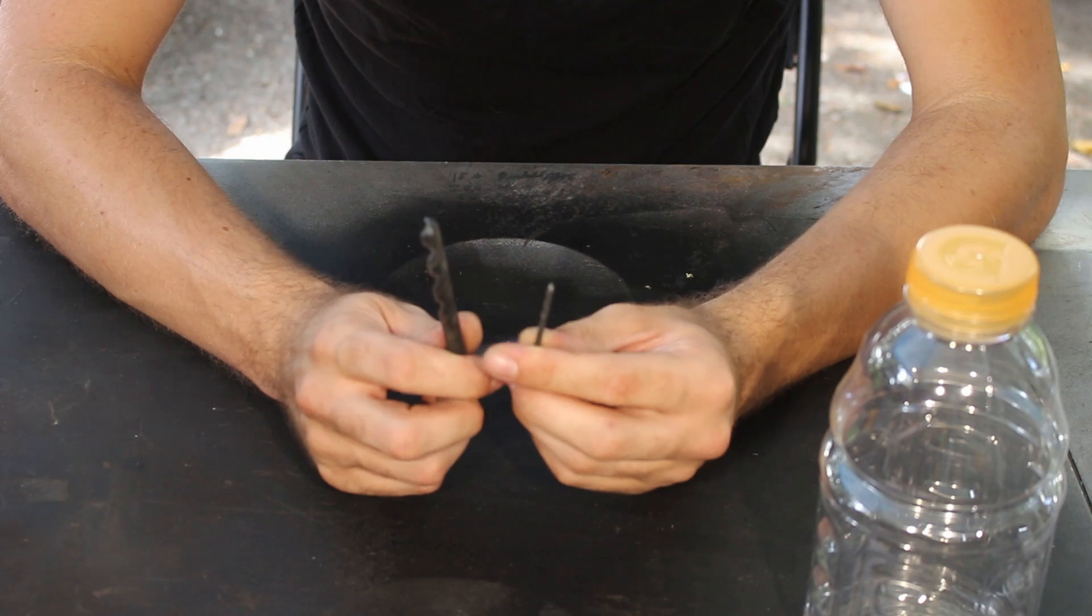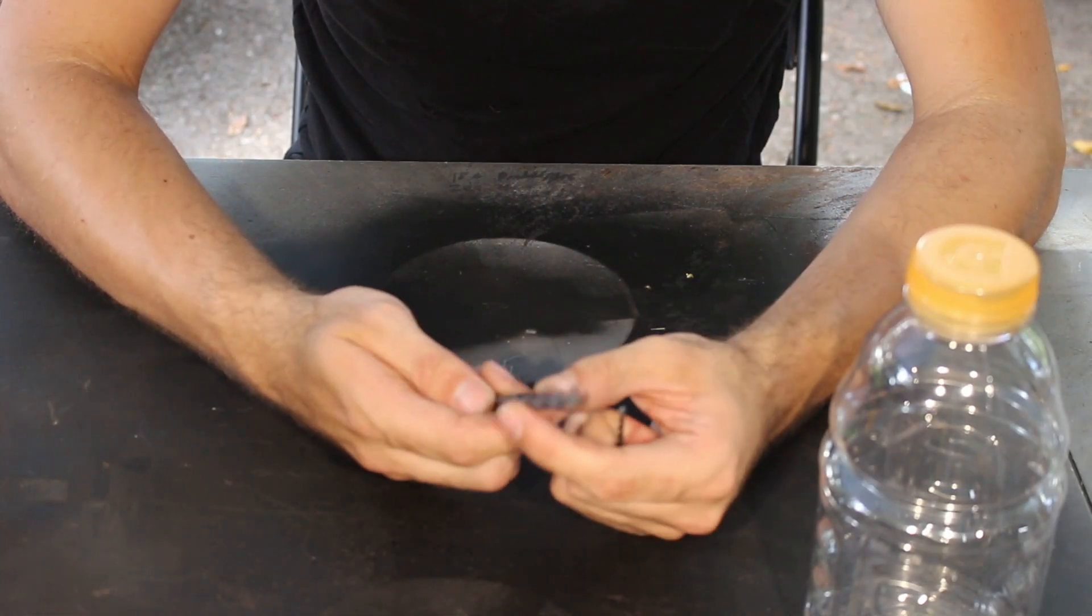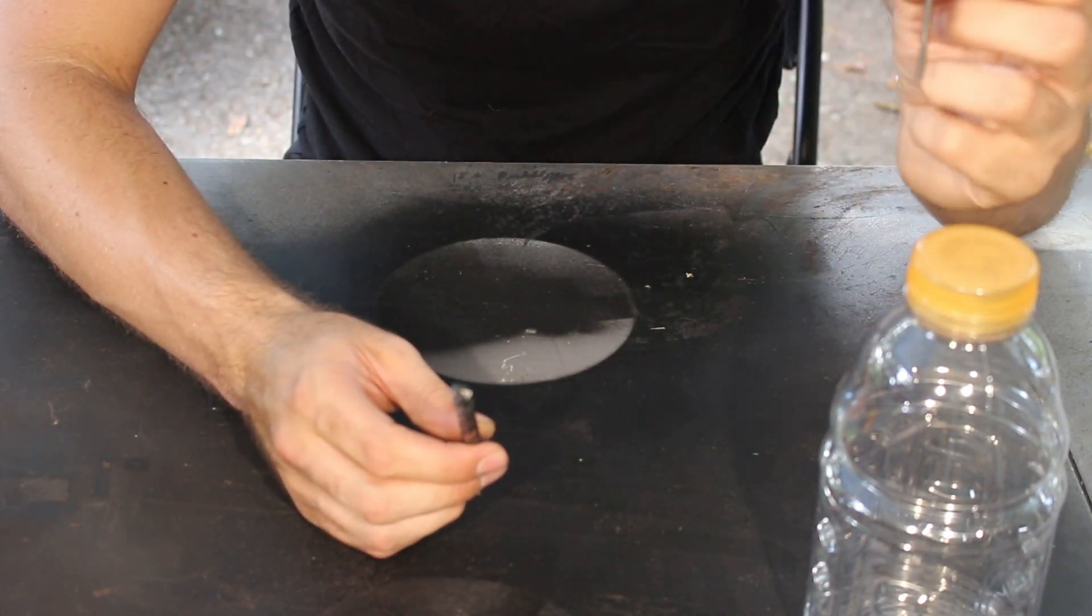You'll need some drill bits. The size of these depends on the size of your hose. This is a 5/16ths outer diameter hose, so I have one of those. I also have a smaller bit to make an air hole in the lid.